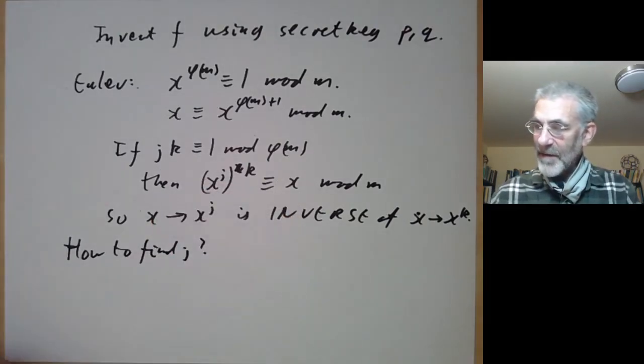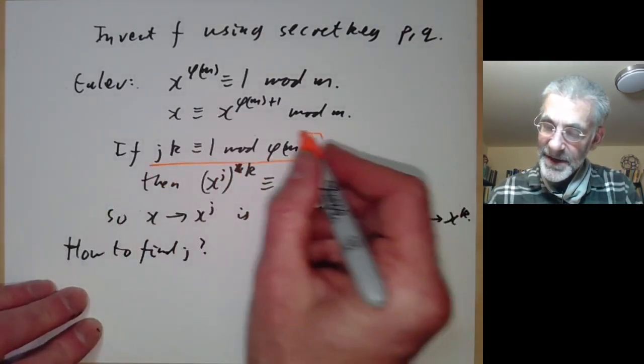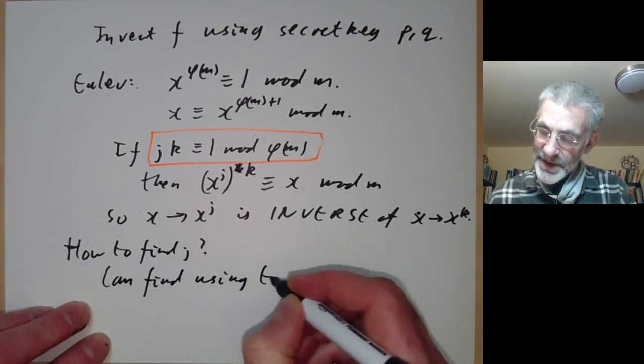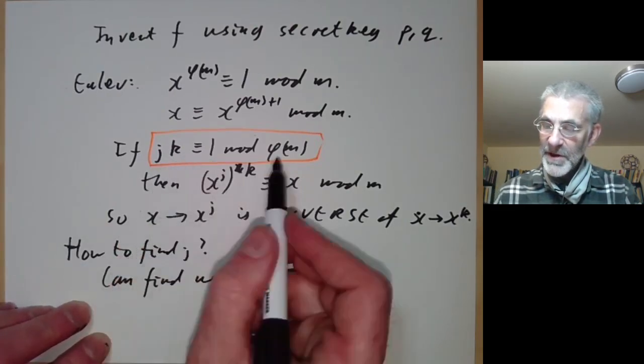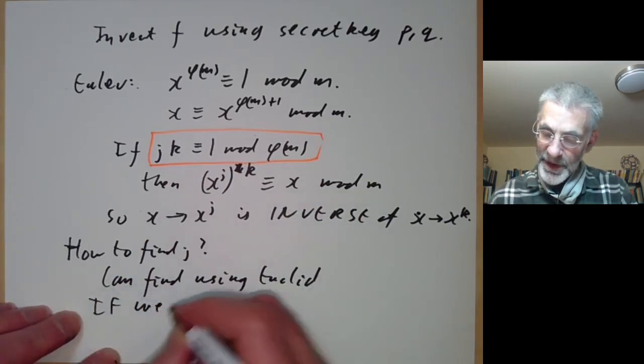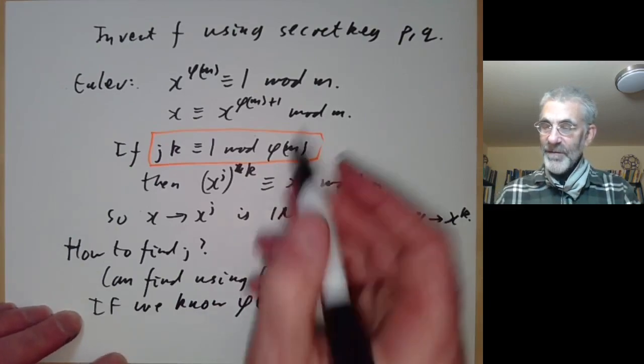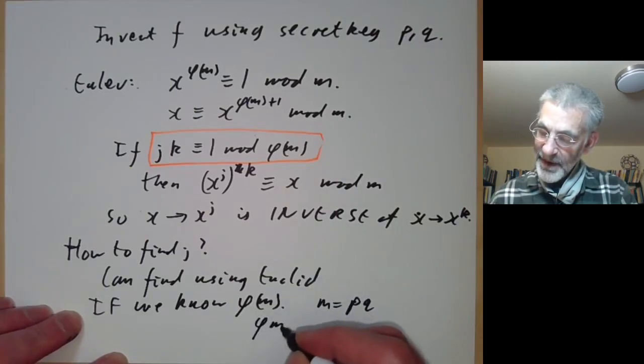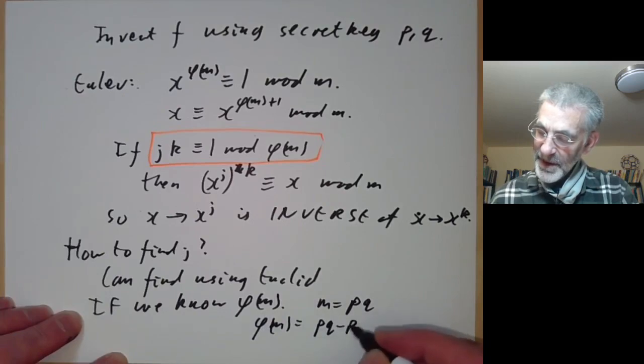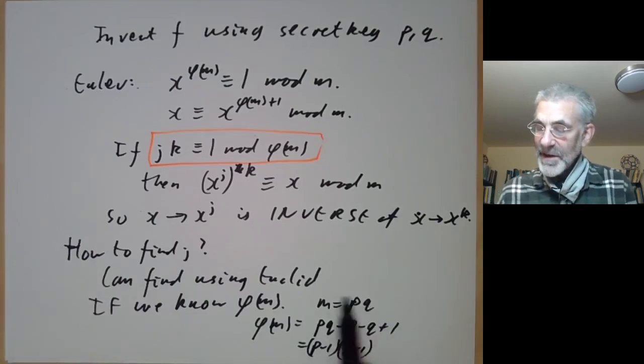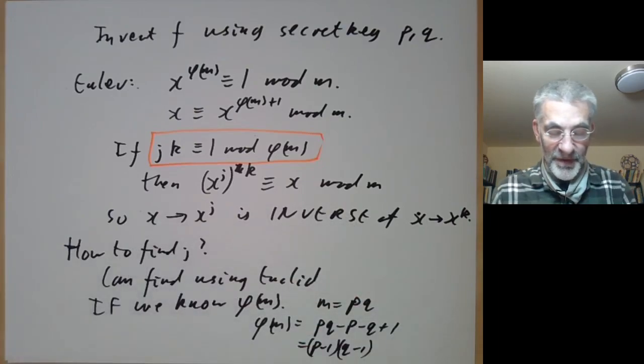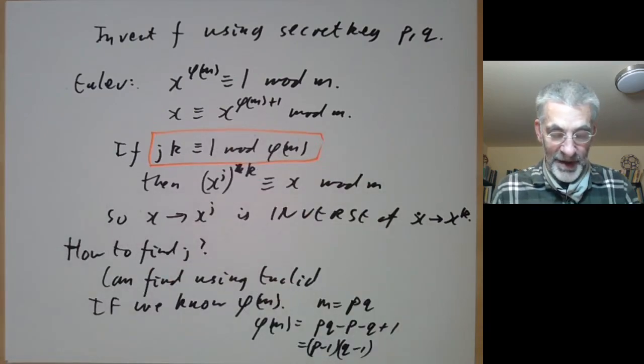How do we find j? We need to solve this equation, so j is the inverse. We can find it using Euclid's algorithm, because this is just finding the inverse of a number modulo φ(m) if we know φ(m). φ(m) is easy because m is pq, product of two primes, so φ(m) equals pq - p - q + 1, which is just (p-1)(q-1). So if we know the factorization of m, then we can invert our trapdoor function. There's your trapdoor function—if you know the factorization of m we can invert it, and if you don't, then it seems to be very difficult.